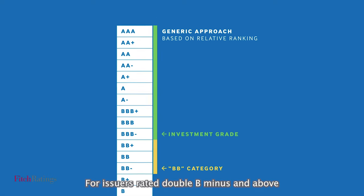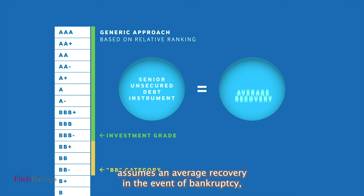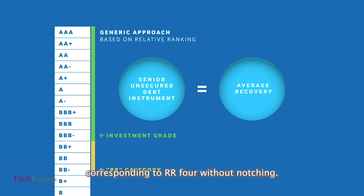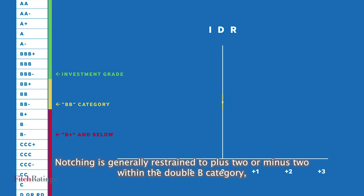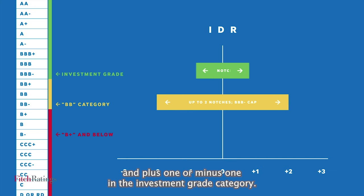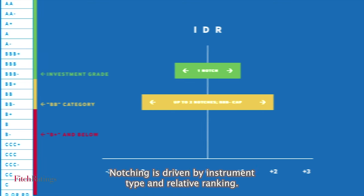For issuers rated BB-minus and above, the rating assigned to a senior unsecured debt instrument assumes an average recovery in the event of bankruptcy, corresponding to RR4 without notching. Notching is generally restrained to plus 2 or minus 2 within the BB category and plus 1 or minus 1 in the investment grade category. Notching is driven by instrument type and relative ranking.